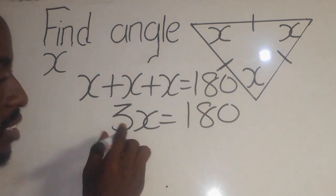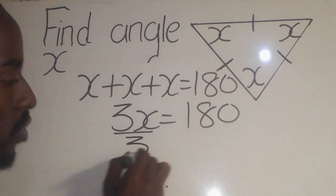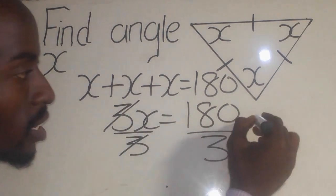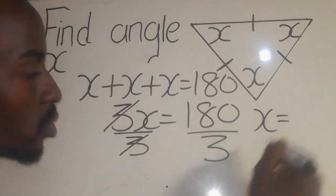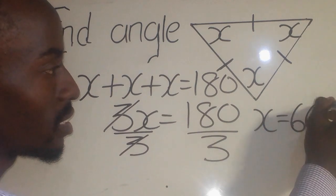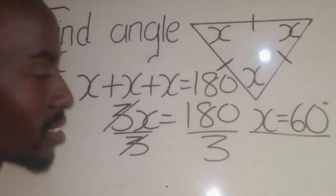Since you want to find x, you can divide by 3 on both sides. They cancel out, so I'm going to remain with x. Now I'm going to say x is equal to, 3 into 180 is going to give me 60 degrees, which is the answer.